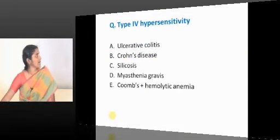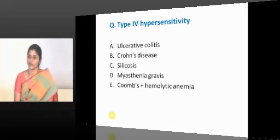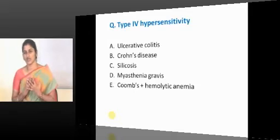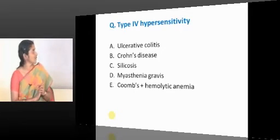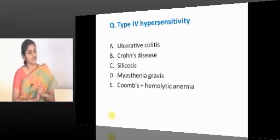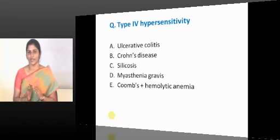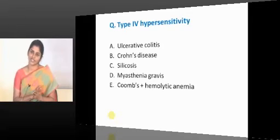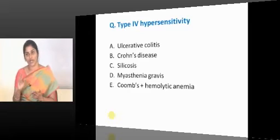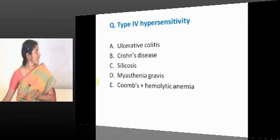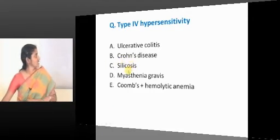Type 4 hypersensitivity reaction. What is Type 4 hypersensitivity reaction? All the granulomatous conditions, all the cytotoxic conditions, all the contact dermatitis conditions will come under Type 4 hypersensitivity reaction. What about ulcerative colitis? Is it not granulomatous? Crohn's is granulomatous. Crohn's is granulomatous whereas ulcerative colitis is non-granulomatous. So Th1 for Crohn's, Th2 for ulcerative colitis. Crohn's disease is granulomatous. Silicosis is a nodular fibrosis lesion, not a granulomatous lesion.